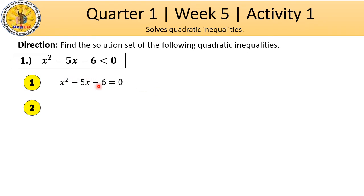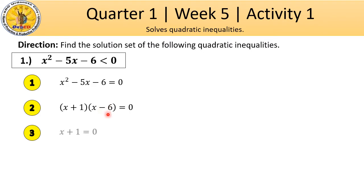The factors of this polynomial are quantity of x plus 1 times quantity of x minus 6. Third step, solve the roots. To solve the roots, equate these factors to 0. So, x plus 1 equals to 0 and x minus 6 equals to 0. Using the addition property of equality, we get x equals to negative 1 and x equals to positive 6. Therefore, negative 1 and positive 6 are our roots.